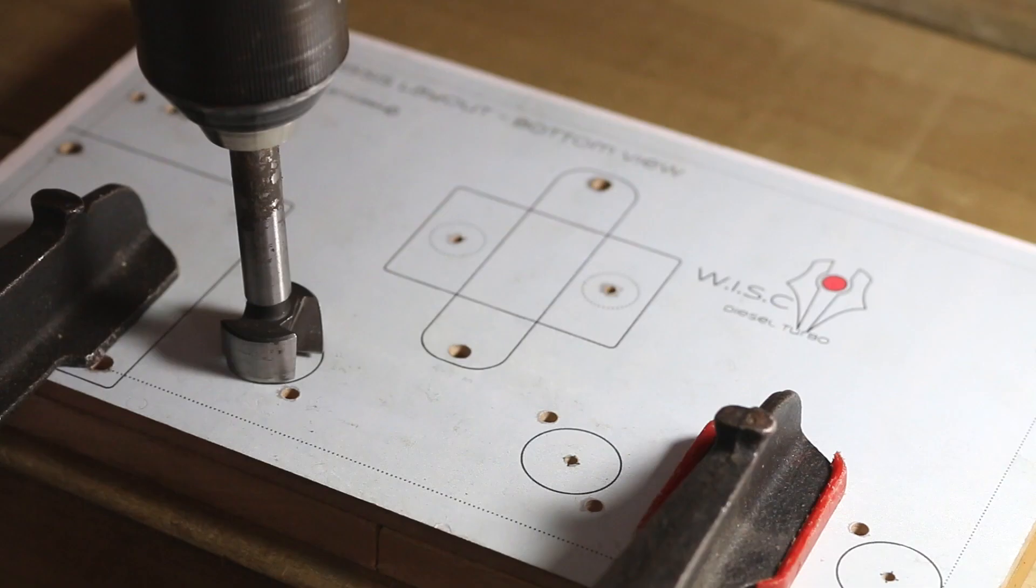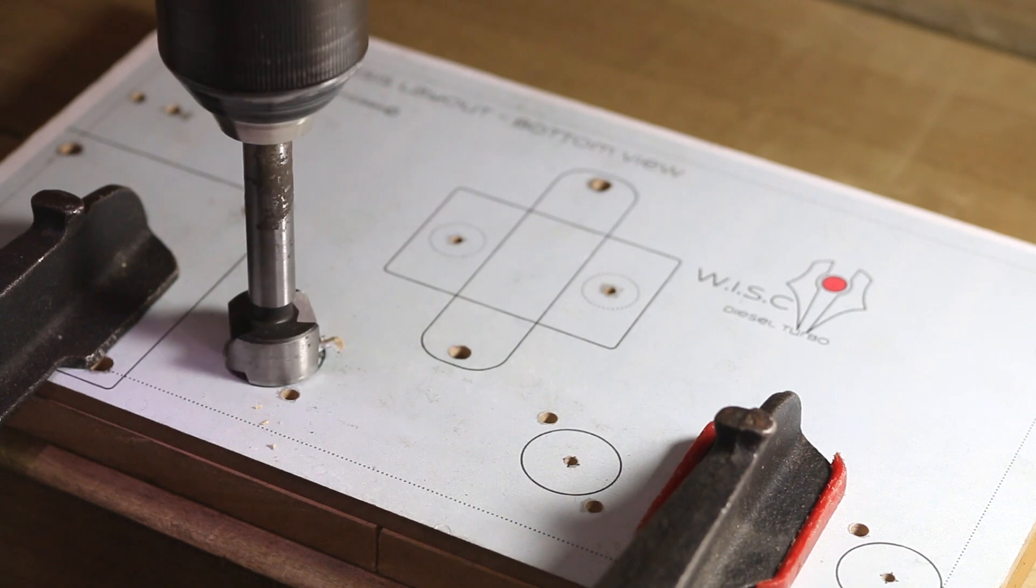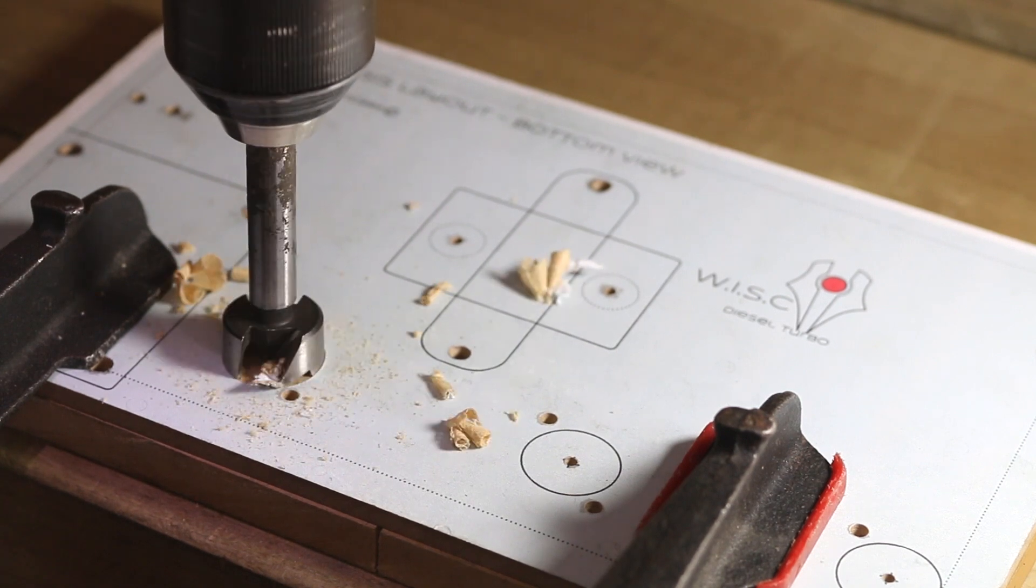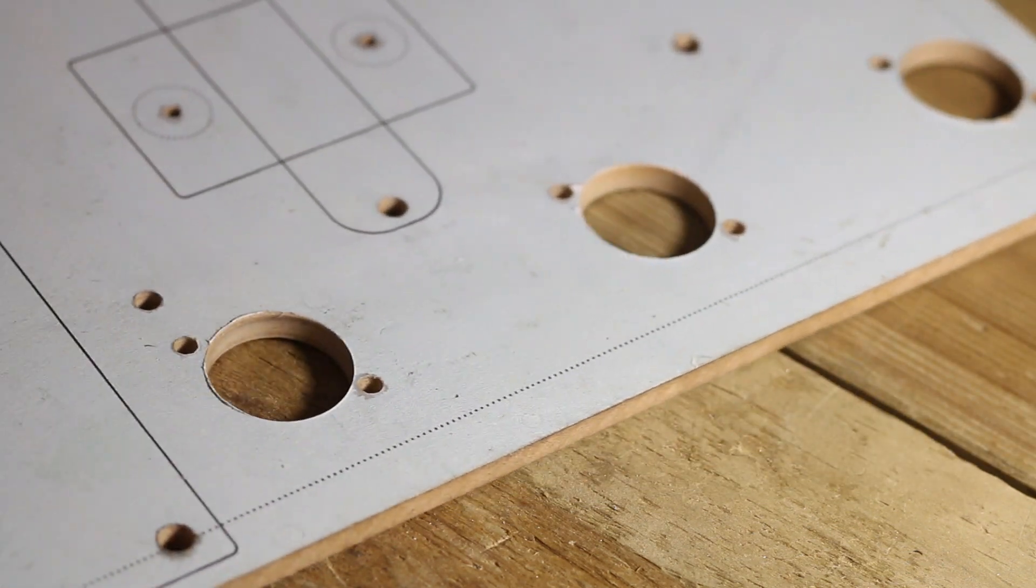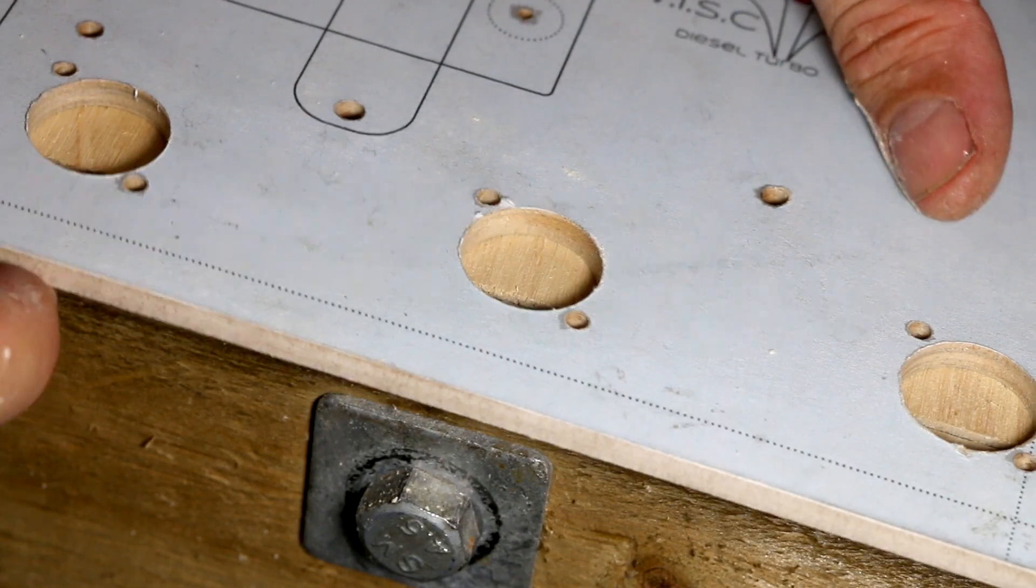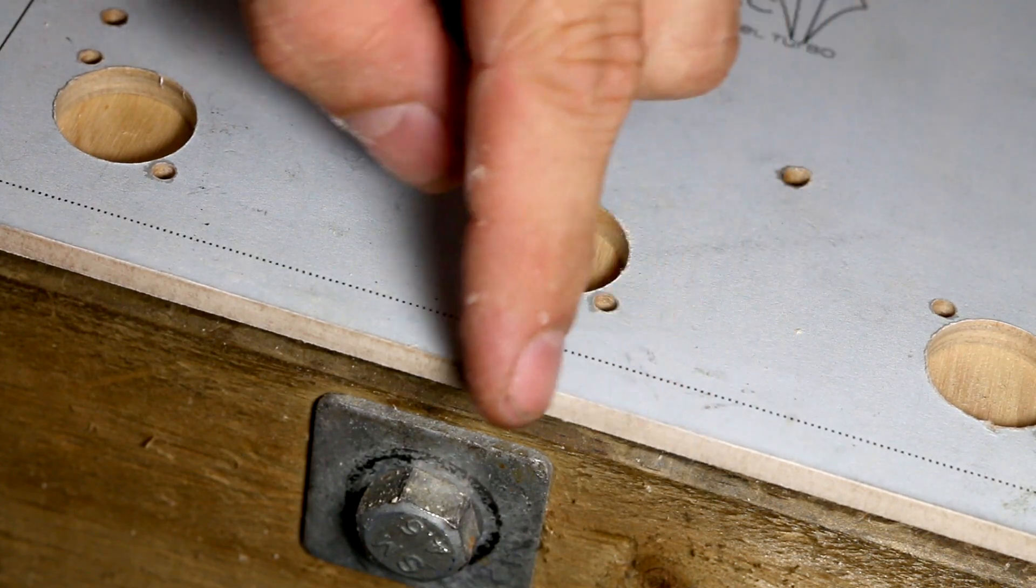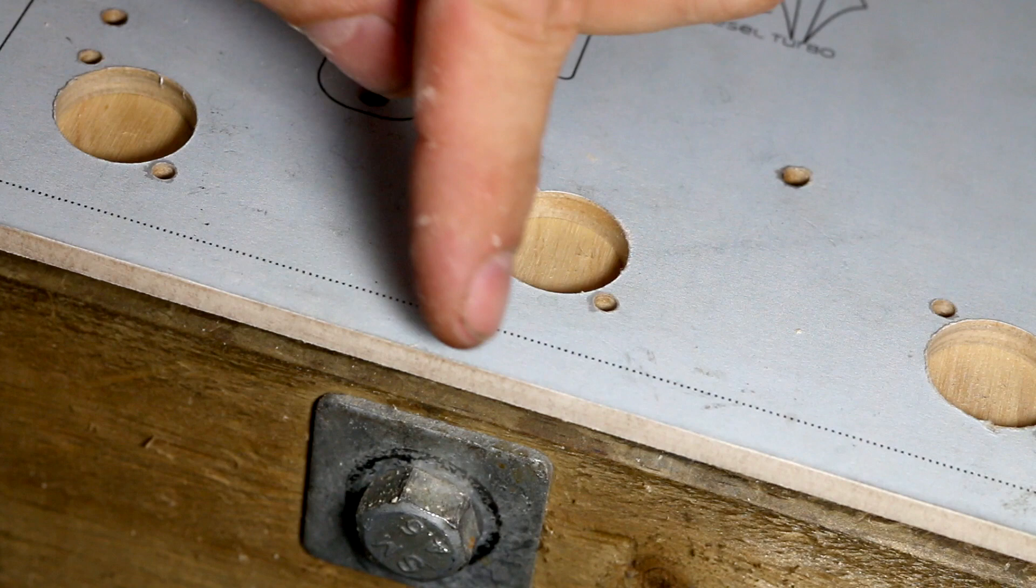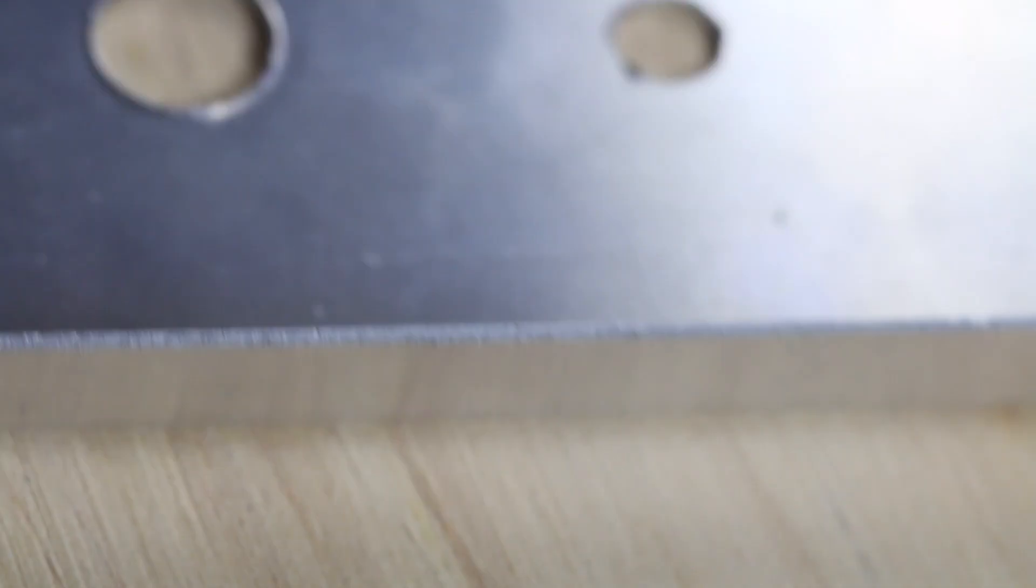The first thing we're going to do is drill out these socket holes with a Forstner bit. Once the holes are drilled out for the sockets, take that edge down next to the sockets. Take the edge down one millimeter, and that's just to allow for the thickness of the chassis.